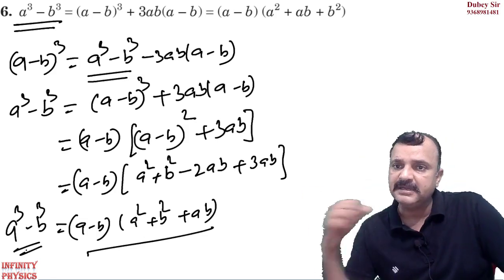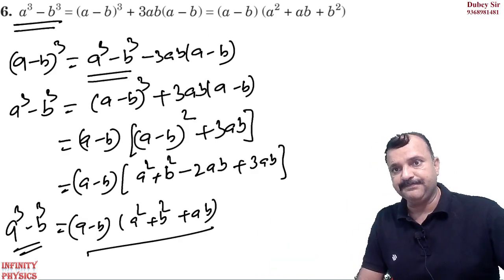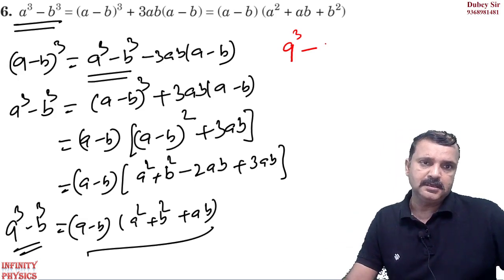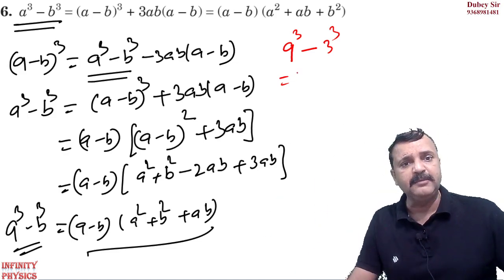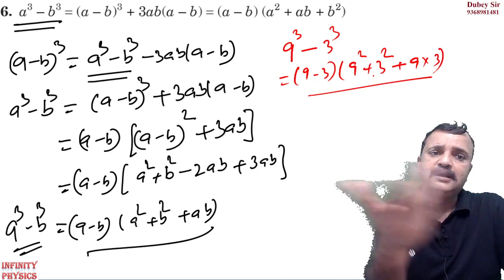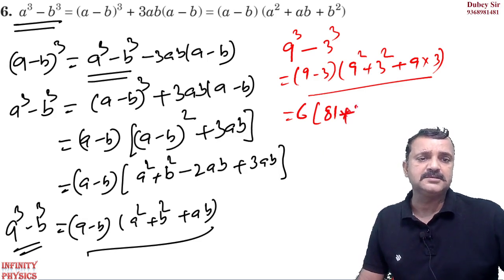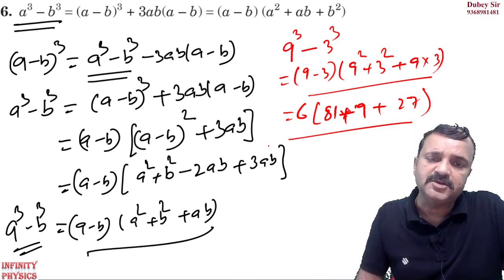So this is your a³ − b³ formula. These are the formulas which you will need in physics in some form or another. It is possible that you are asked to calculate something like 9³ − 3³. Instead of finding 9 cube and 3 cube separately, use the formula: (9 − 3) into (9² + 3² − 9×3) = 6 into (81 + 9 − 27) = 6 into 63. This is a way to increase your calculation speed.